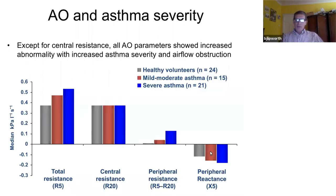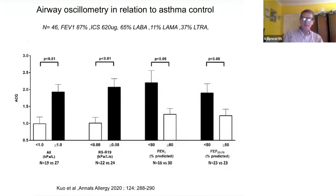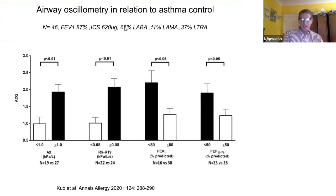If you're still not convinced, here's another cohort which my current fellow Chris Kuo published in Annals of Allergy, Asthma and Immunology — a smaller cohort of 46 patients, mean FEV1 80%, 600 micrograms of inhaled steroid, 65% taking LABA, 11% LAMA, and 40% LTRA — so more on the moderate end of the asthma spectrum.